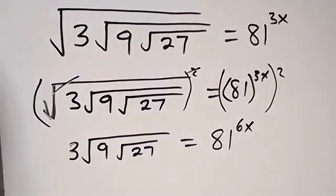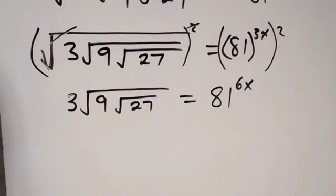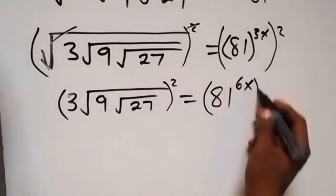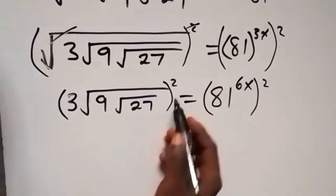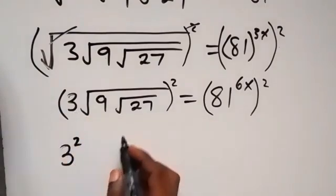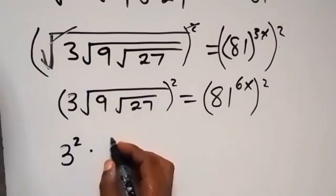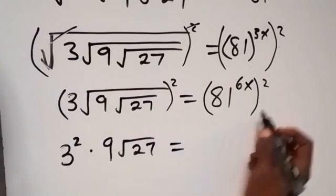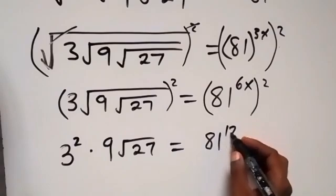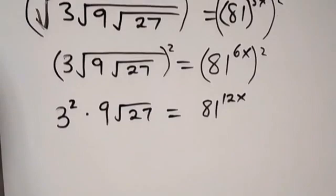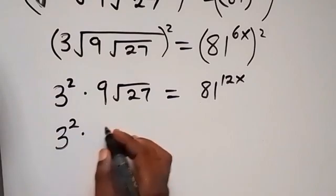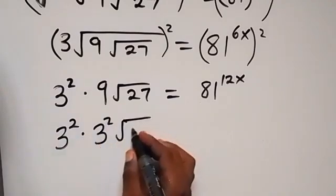Let's take the square on both sides again. The square affects the 3 and the square root: 3 squared gives 3², then square cancels the square root, leaving us with 3² times 9 times root 27, which equals 81 raised to power 12x. This can also be written as 3 raised to power 12x, times root 27, equals 81 raised to power 12x.